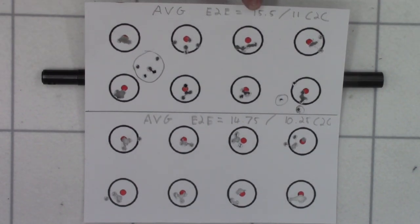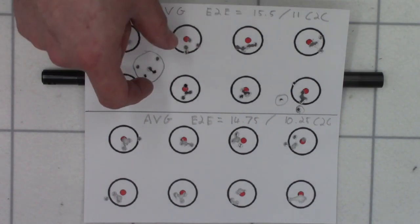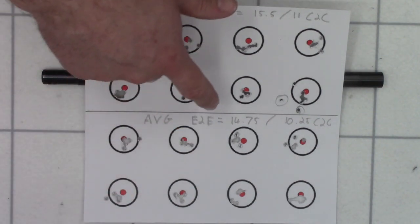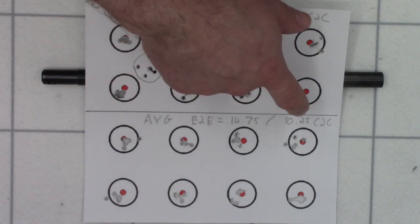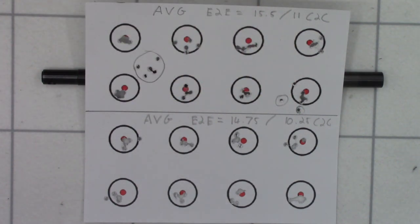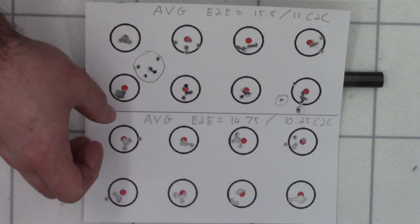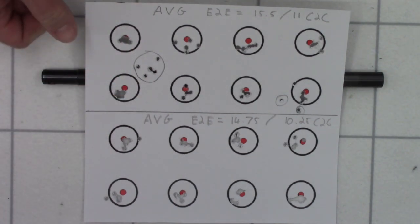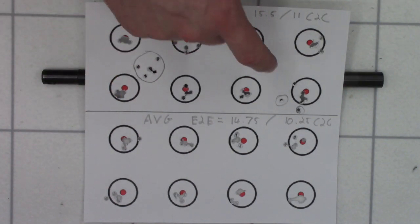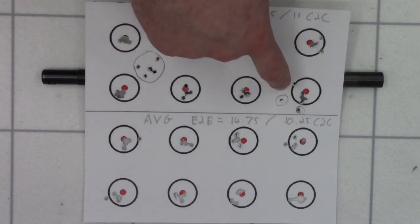But at the top here, we see the average edge to edge was 15.5 millimeters. So center to center, that would be 11 mil center to center groups. Average groups after the re-crown were 14.75 millimeters edge to edge, or 10.25 millimeters center to center. So the groups after the re-crown were 0.75 millimeters better than the ones before. And again, I put that squarely down to the removal of the extreme flyers.